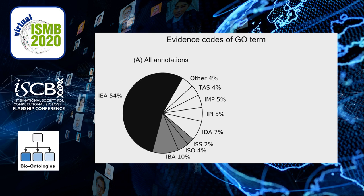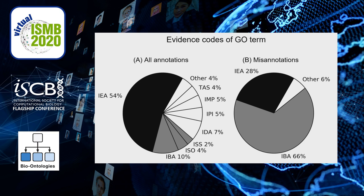For the 20 model organisms we picked, 54% of GO term annotations are IEA terms from fully automated prediction, while only 16% are from manually curated computational predictions such as IBA terms. However, for the subset of misannotated GO terms, the vast majority are GO terms with evidence code IBA, or inferred from biological ancestor. IBA GO terms are semi-manual computational function predictions using a phylogenetic tree. To understand why IBA terms are so easily misannotated, we checked some examples.